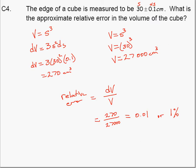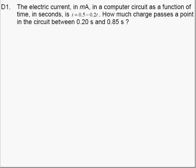The next example, D1, is in the integration applications and it's about electricity. The electrical current is given by this equation, and we're asked to find how much charge Q passes a point in the circuit between these two times.